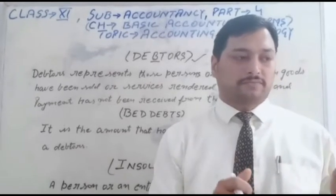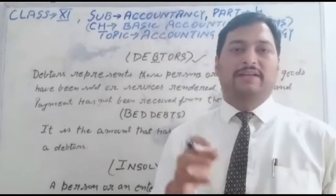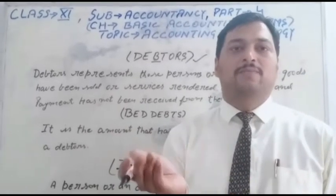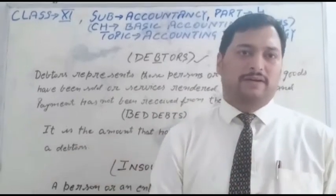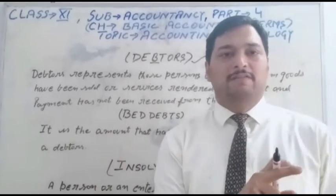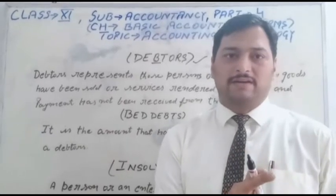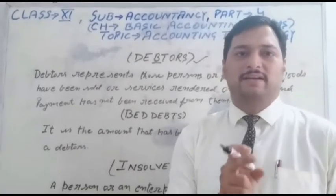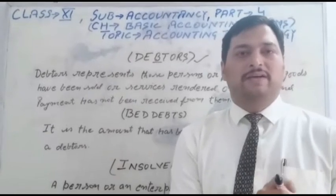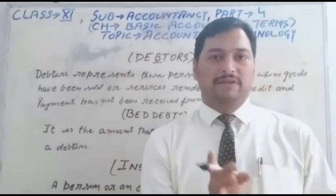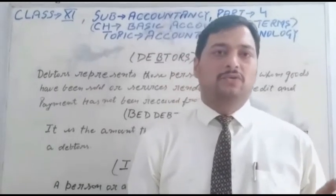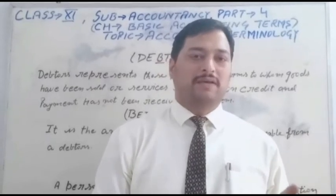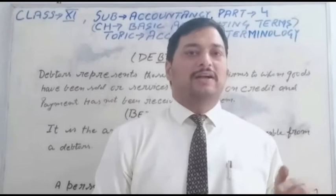So the meaning is clear: those goods are sold to his customer on a credit basis, the customer will pay the amount in future — it is called debtors. Now let's see the proper meaning of debtors. Debtors represent those persons or firms to whom goods have been sold on credit, and payment has not been received from them, but it is possible the payment will be received during the accounting period.